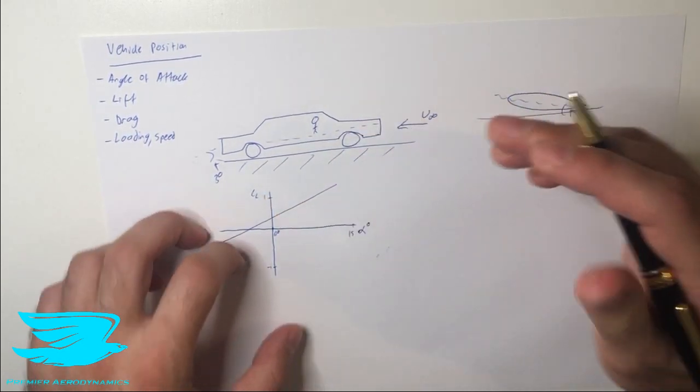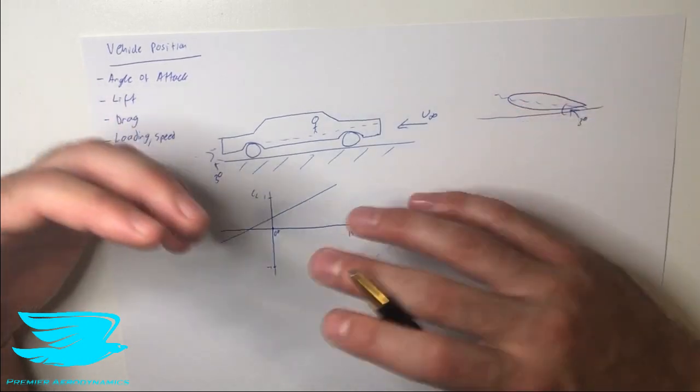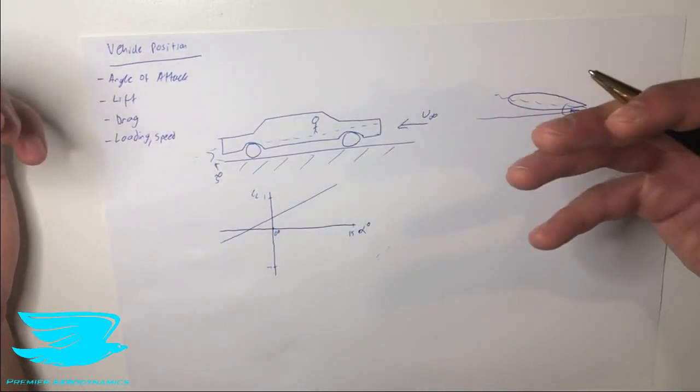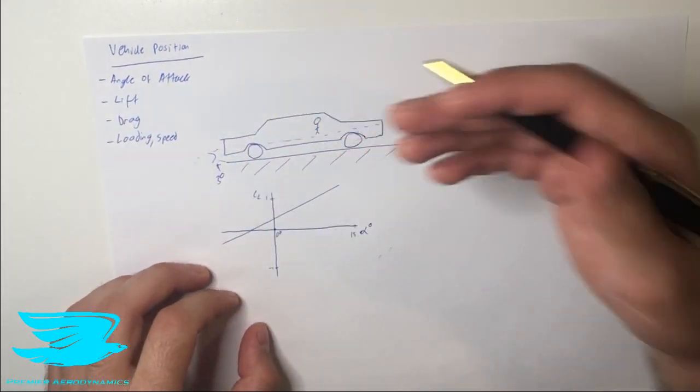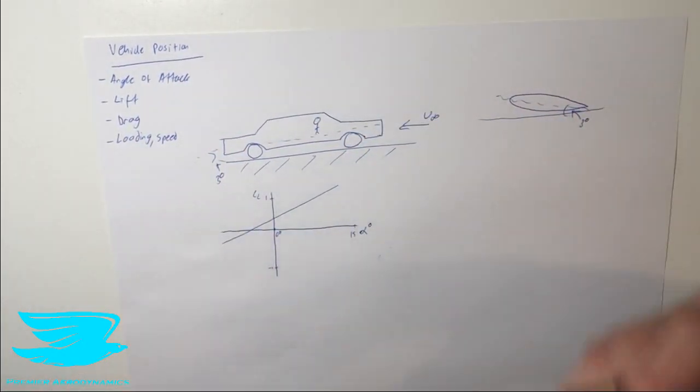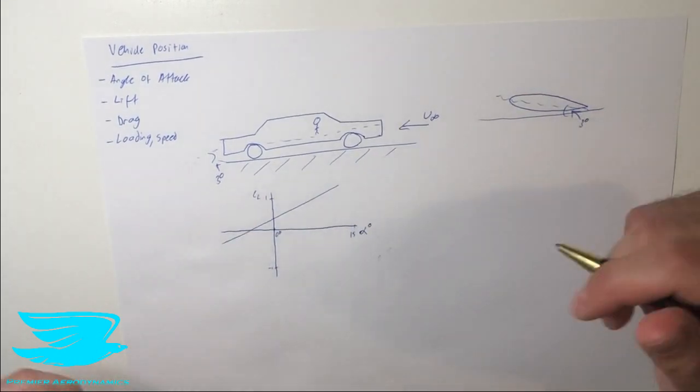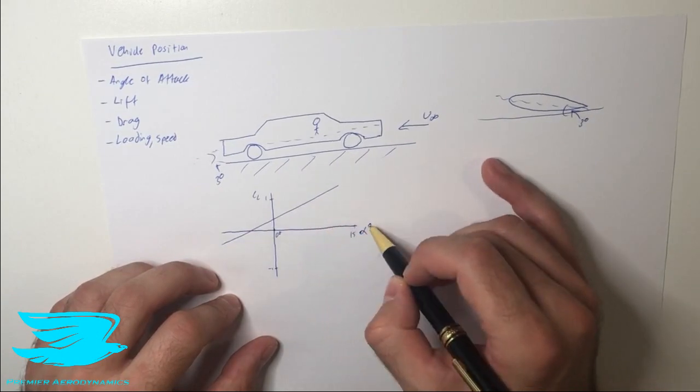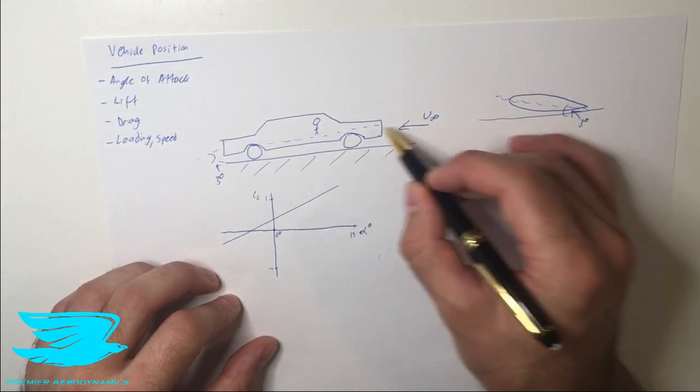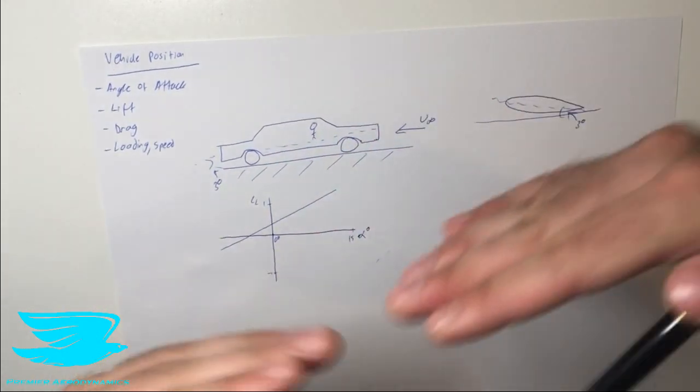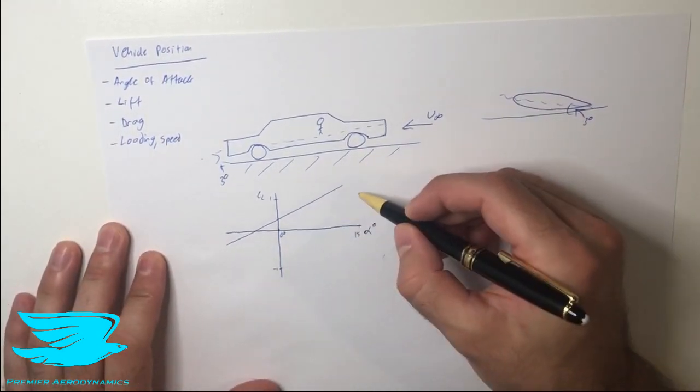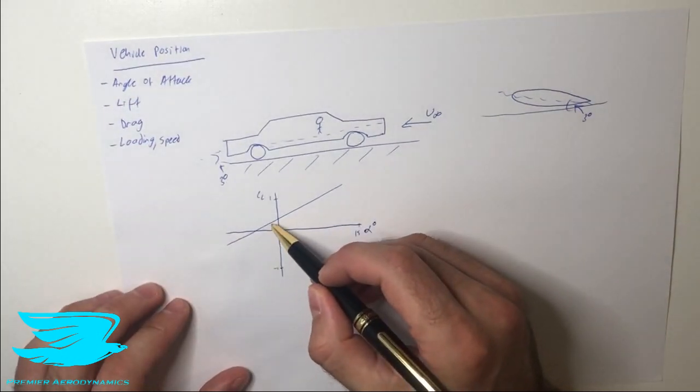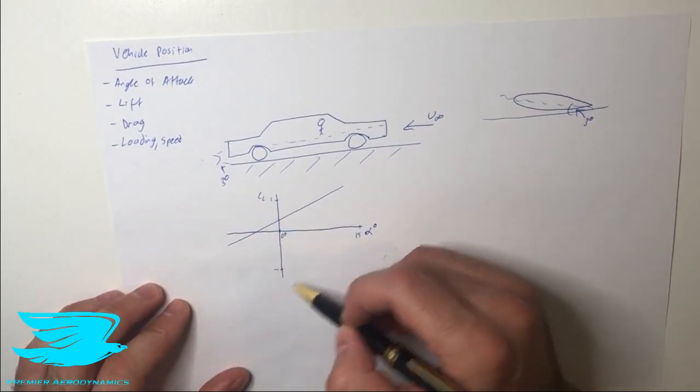What this means is that at zero degree angle of attack we don't actually have zero lift. Usually we actually have quite a positive lift and to get a negative lift even at any angle of attack, you usually have to do quite a lot to a car. We need to work on the diffuser, we need to work on the spoilers around the car. As we increase the angle of attack, so the wind can either come at a different angle or we pitch the car up at a different angle, we will get greater and greater lift.